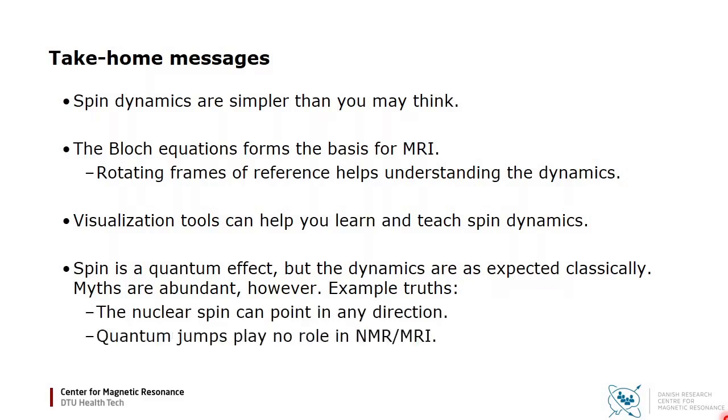The nuclear spin can point in any direction. Quantum jumps play no role in NMR or MRI. And homogeneous fields will rotate the spin distribution as a whole.